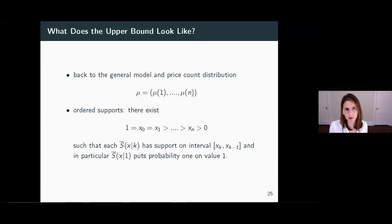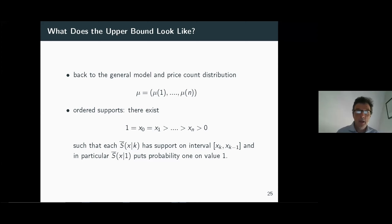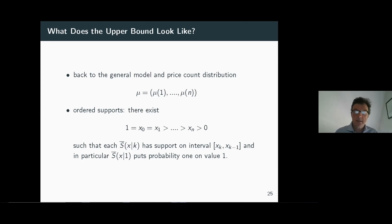The equilibrium will have an ordered support property: firms with a lower bound of one on the price count price higher; firms with a higher lower bound price more competitively. This generalizes the idea of nested markets from the public signals case. The equilibrium strategy has the remarkable property that across all these supports, while choosing a price, a firm is simultaneously indifferent between any lower price also in the entire support of the price distribution.